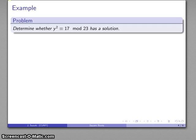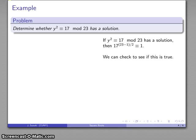For example, let's take a look at the problem y squared congruent to 17 mod 23. We might make the following chain of arguments. If this has a solution, then 17 to power 23 minus 1 over 2 will be congruent to 1. And we can check to see if this is true.